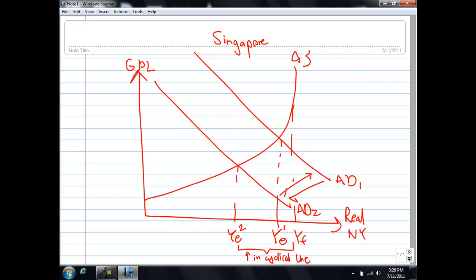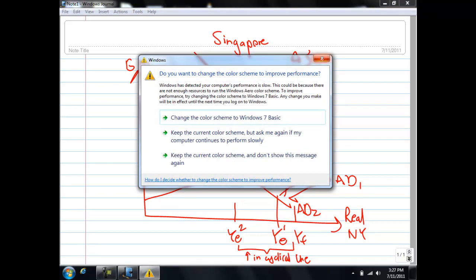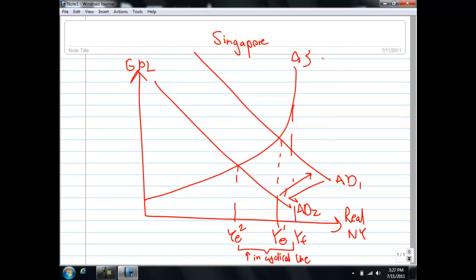First, X minus M is such a huge component of our AD curve that any attempt by our government to increase G or increase C will have very little impact on our AD curve. The second reason is that our multiplier is very small. When our multiplier is very small, the use of demand management policy will not be so effective to push the AD curve back.